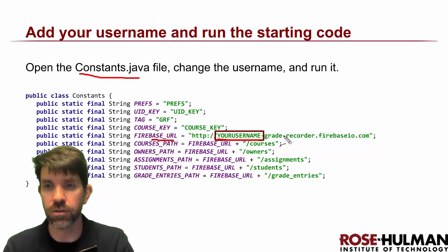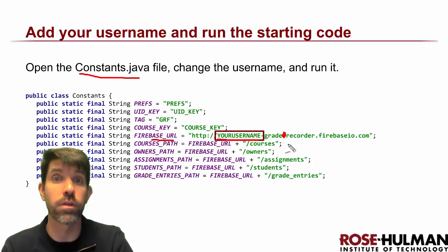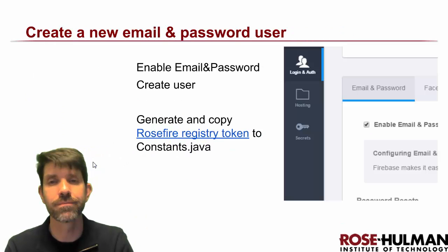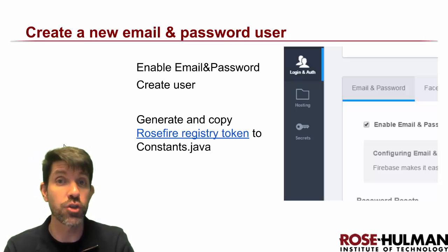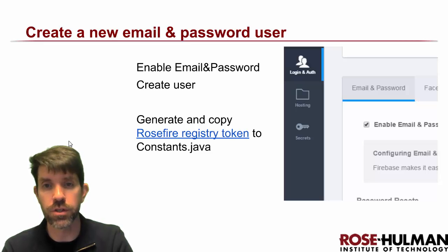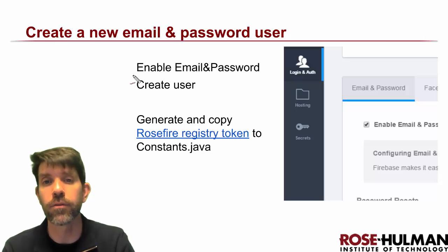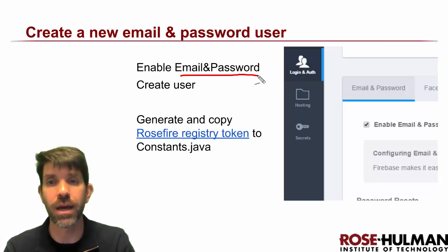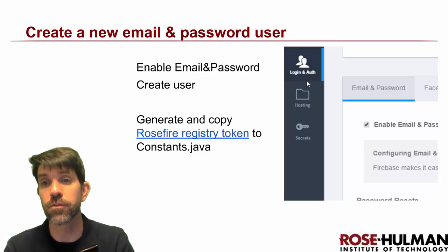Also notice there's a hyphen that needs to be removed — that's a typo. Make sure the URL matches your own. Next, you'll want to set up authentication. This app has two forms of authentication as you may have seen from the login screen: email/password and Rosefire. Rose-Hulman students can use either one; for everyone else, email and password is basically your only option.